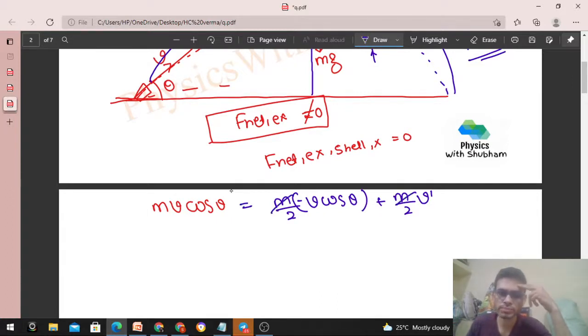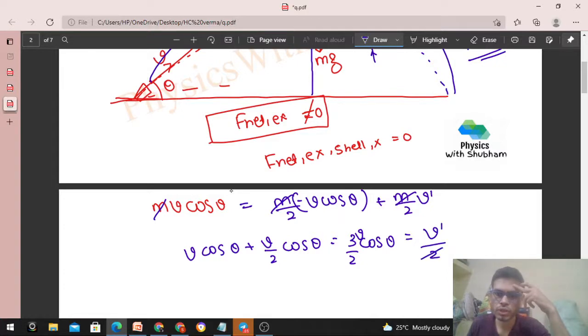M will cancel. Check it out. V cos theta plus V/2 cos theta, right? 3/2 into cos theta. V cos theta, right? 3/2 V cos theta. That is equal to V dash by 2.